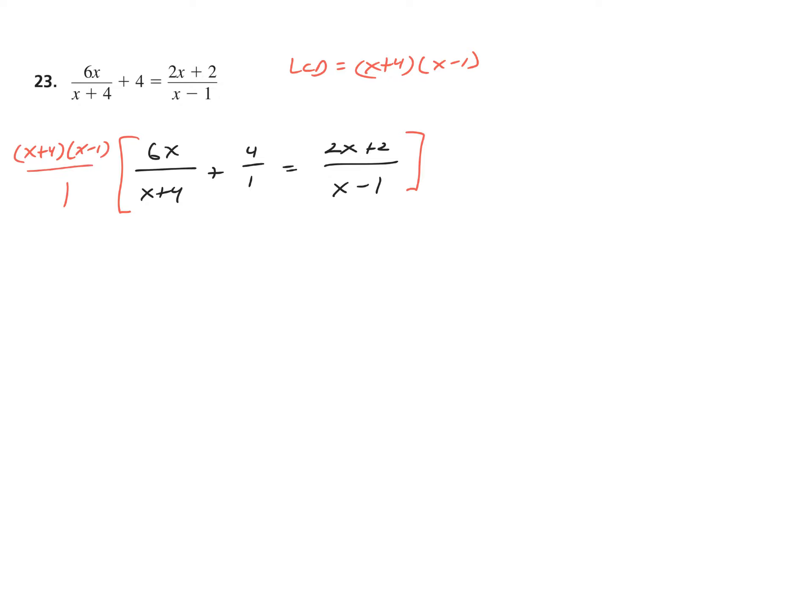Once we have the LCD identified, we group the entire equation and multiply through by that LCD expressed over 1 — distribute, distribute, distribute. In the interest of time, let's do the cancellation mentally. The first distribution will be blue, the second distribution will be green, and the third distribution will be purple, so we can follow them along.